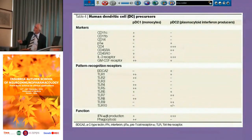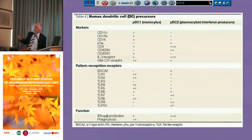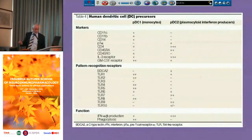The difference here is the pattern recognition receptor expression — in this case, the toll-like receptors — which differs between these lineages. One important distinction is interferon alpha-beta production, which is low in myeloid dendritic cells and high in plasmacytoid dendritic cells.